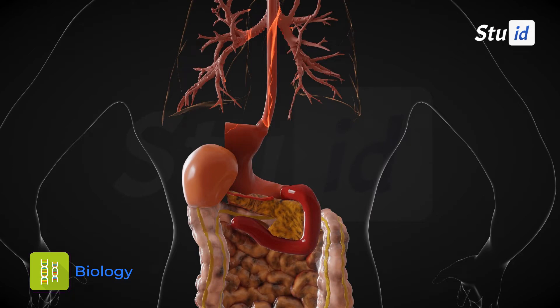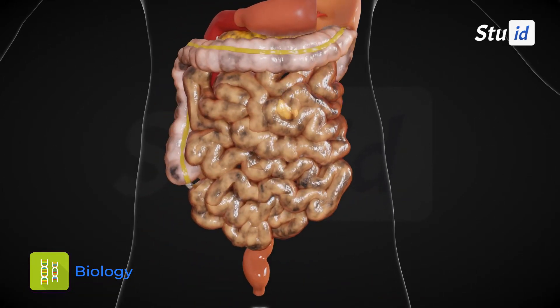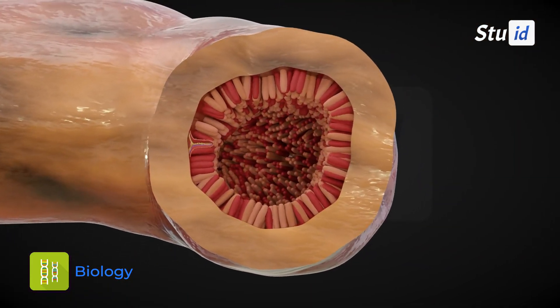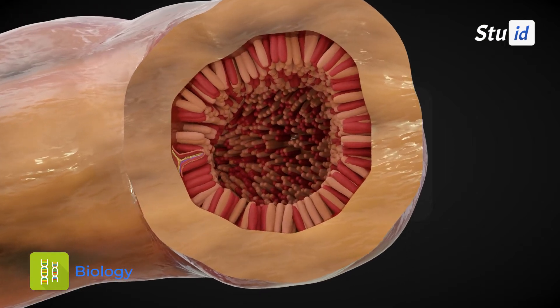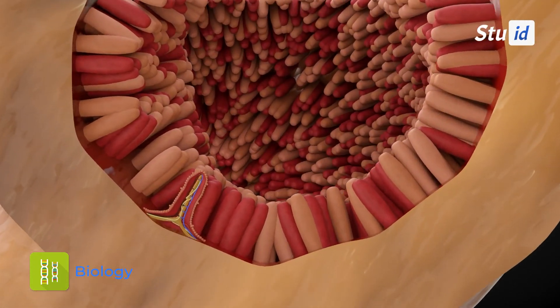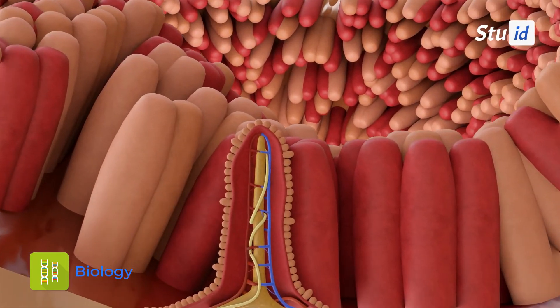The food enters into the small intestine from the stomach. The small intestine is the place where maximum digestion is taking place. The inner lining of the small intestine has numerous finger-like projections like this. They are known as villi, and these villi increase the surface area for absorption. These villi are rich in blood vessels that take the absorbed food into various parts of the body.